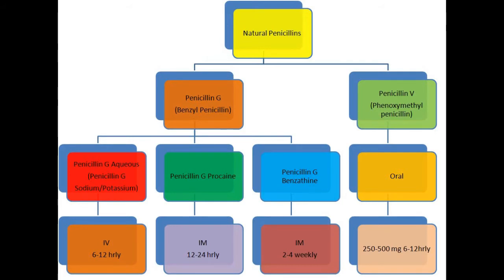A common point of confusion is the difference between penicillin G and penicillin V. Penicillin V, or phenoxymethyl penicillin, is the form that can be used orally, whereas penicillin G is given either intravenously or intramuscularly. Penicillin G was initially developed, and penicillin V was developed later.